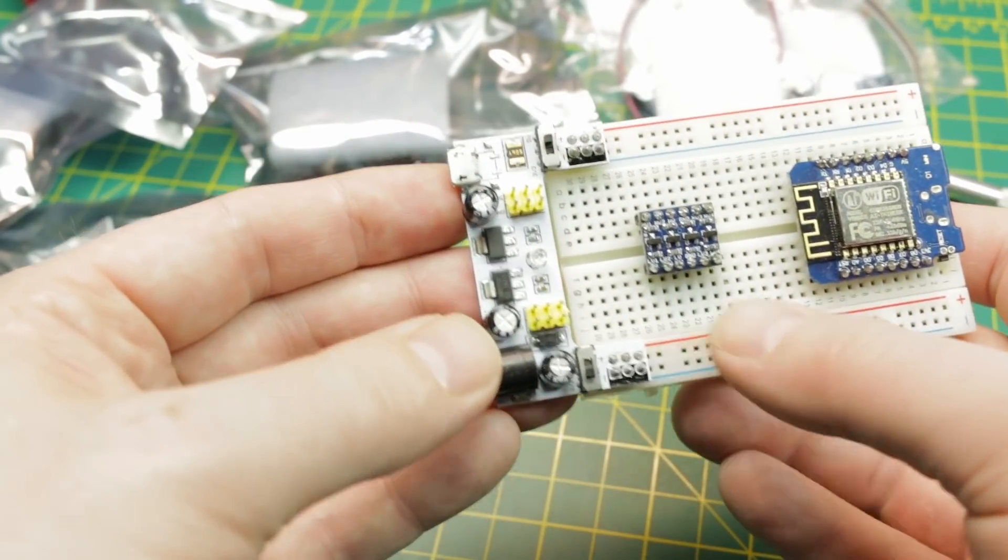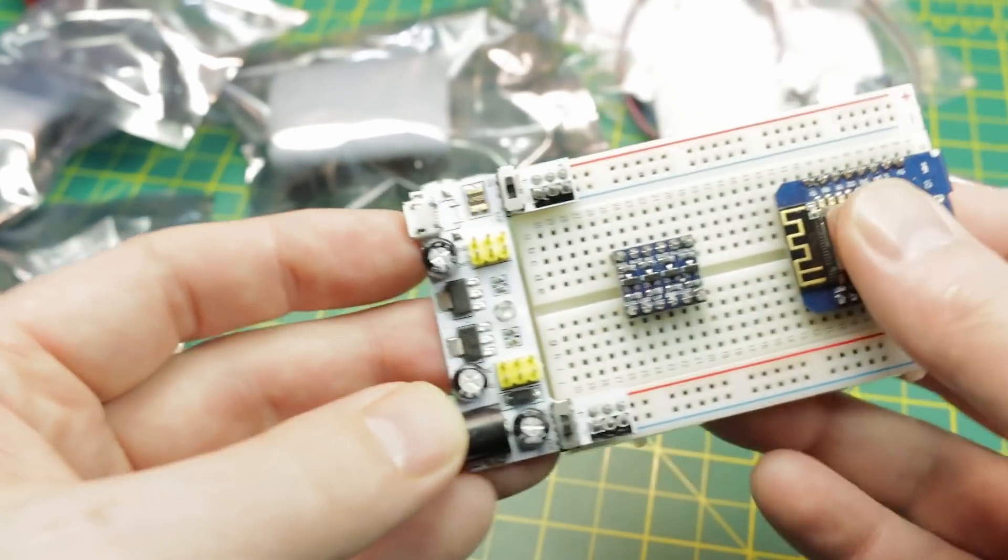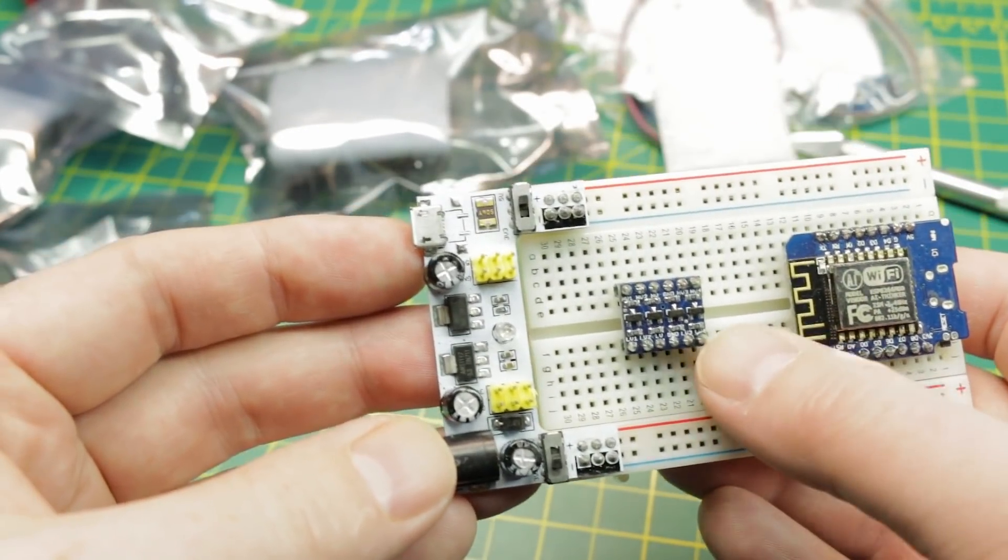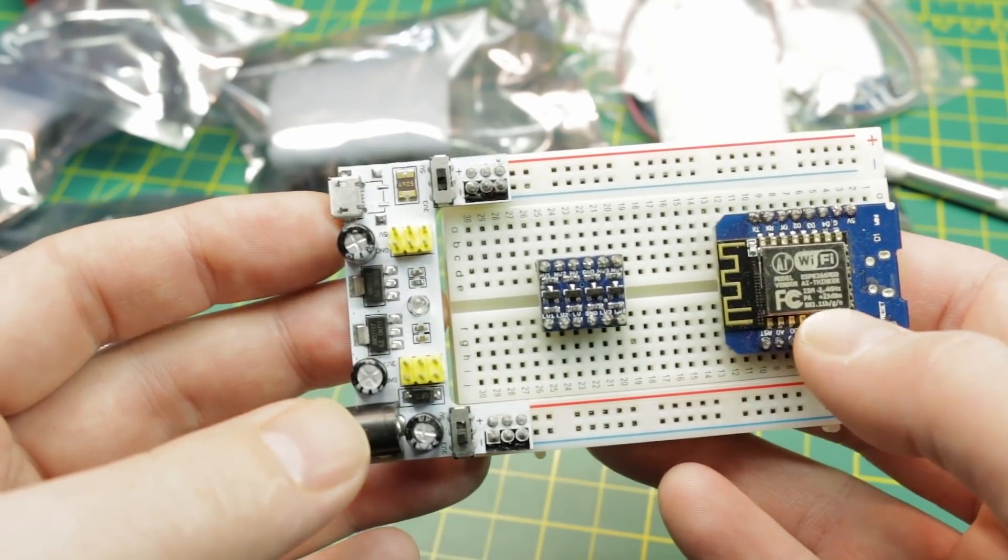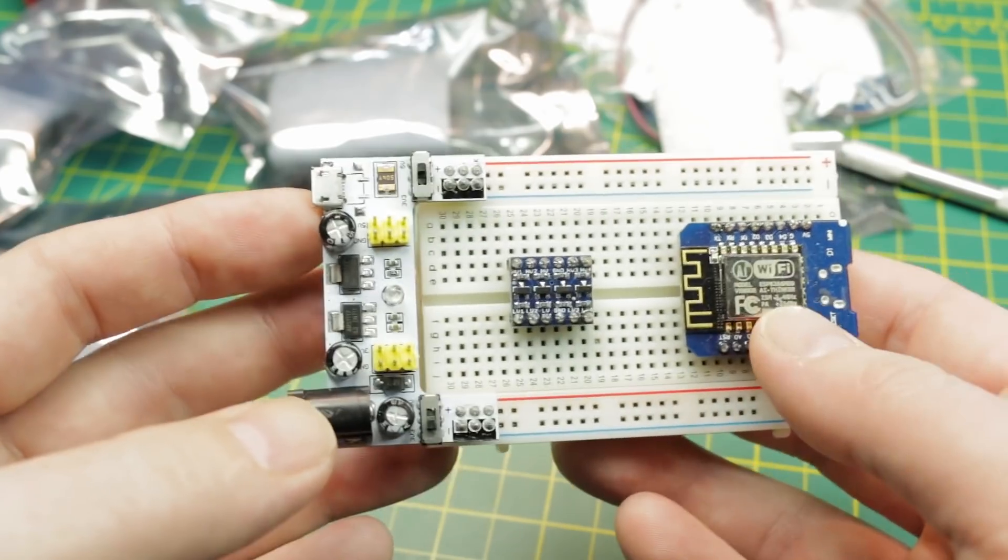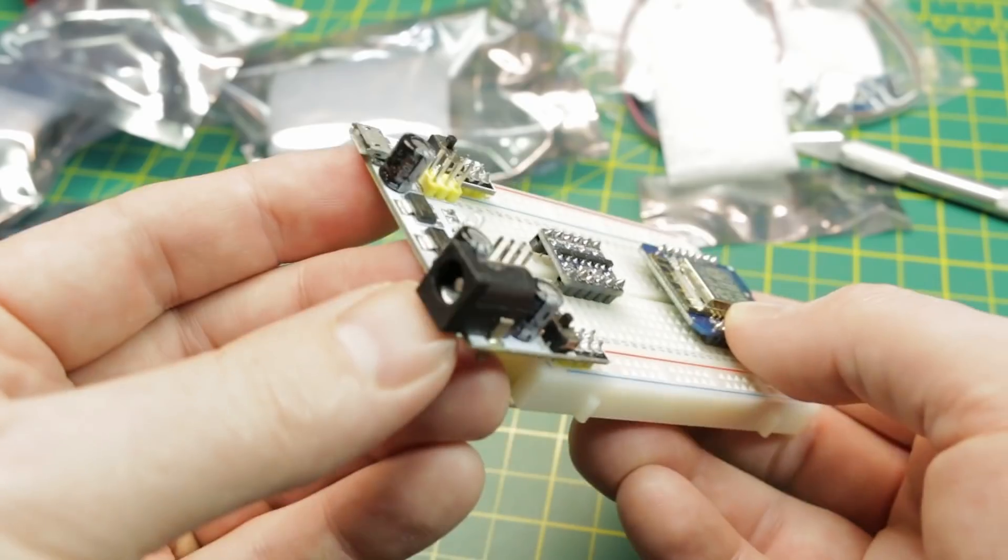Just having the 3.3 volt rail to plug in with USB. Really, really handy if you're working with an ESP8266 project or anything else that requires a 3.3 volt power supply. So it's built right in. Why not? Really cool. Nice and simple.